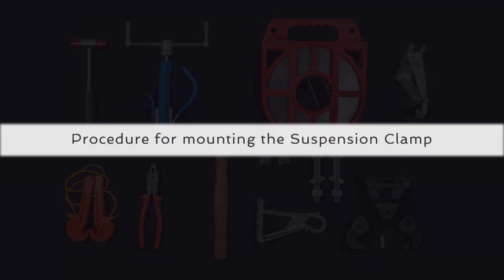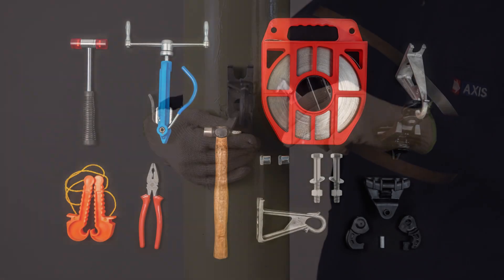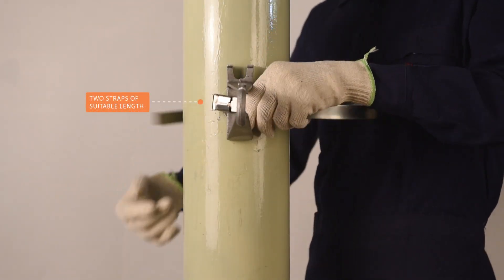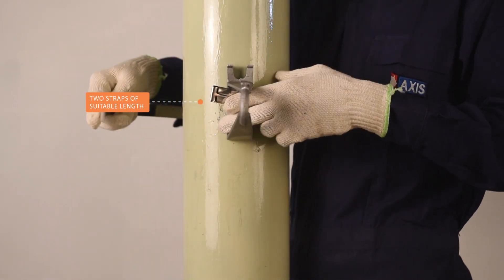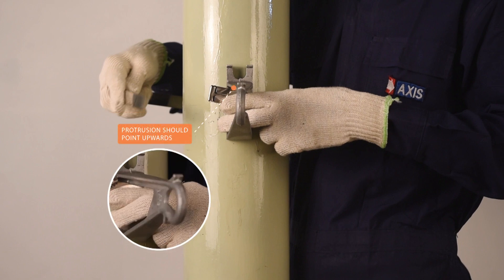Let us now look at the correct procedure of mounting the suspension clamp assembly on a pole by means of strapping. Take two straps of suitable length. Make sure the metal protrusion is pointing upwards.